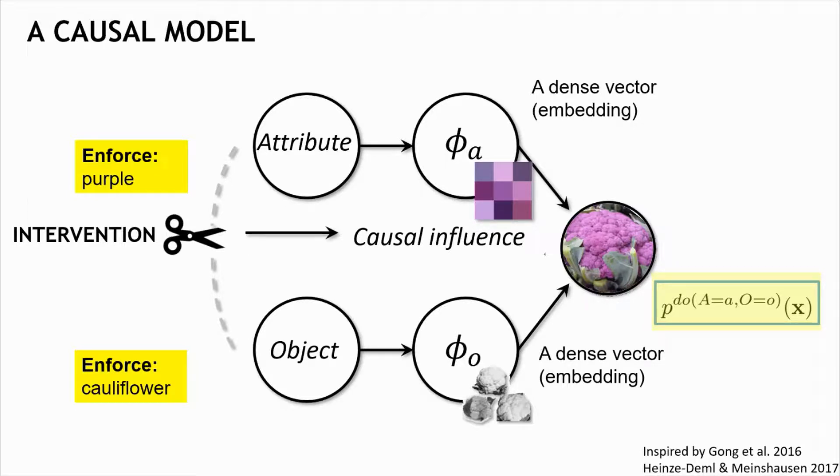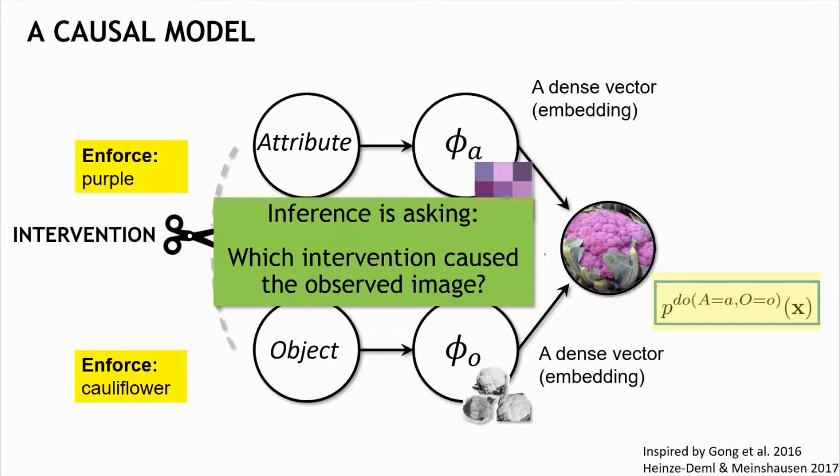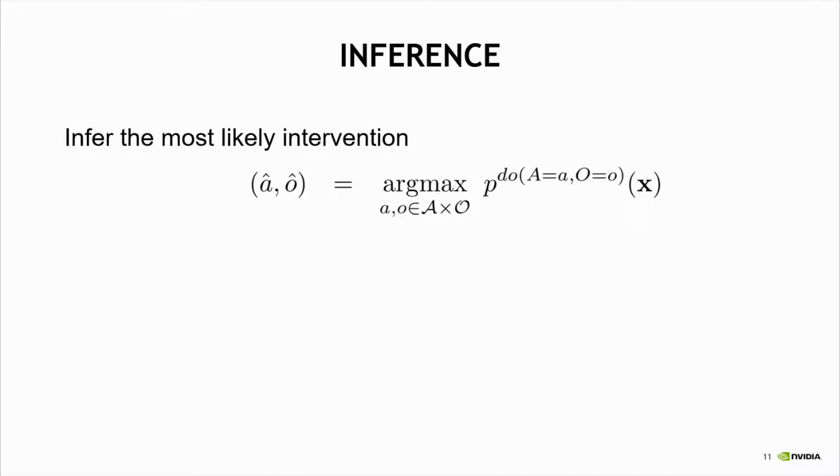Because we treat images from new combinations as interventions, we postulate that the question we should ask at inference time is: which intervention on attributes and objects caused the observed image? So we can compute the probability of an image given this enforced intervention, and under some simplifying assumptions, this interventional distribution becomes equivalent to the simple conditional distribution.